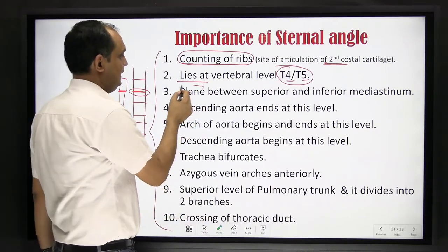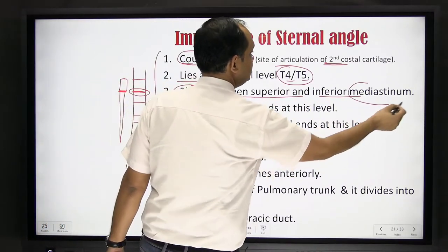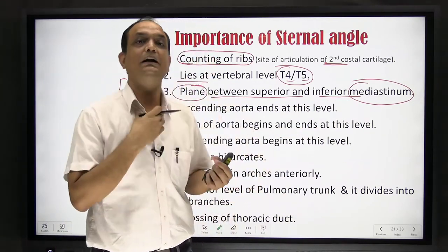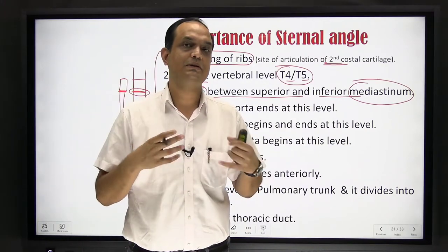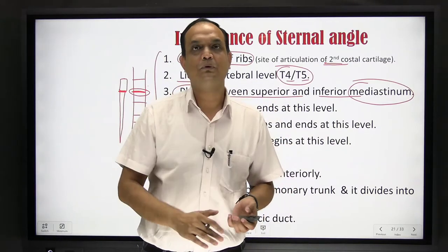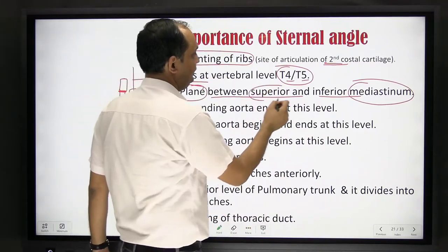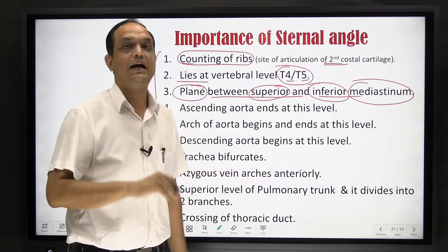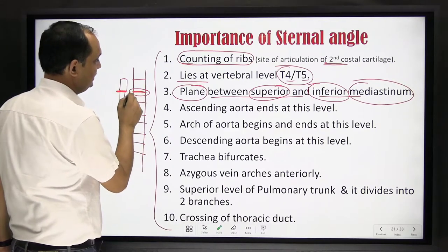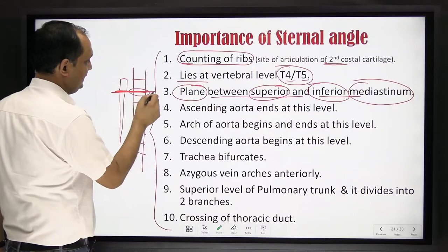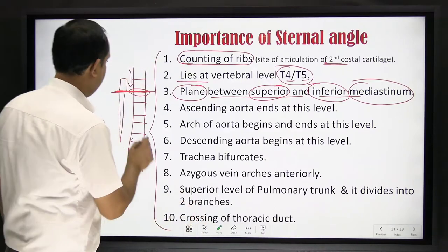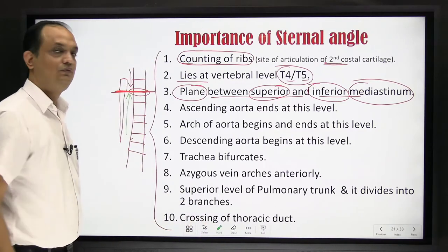This plane decides where we separate the superior and inferior mediastinum. The mediastinum is a soft tissue space in the midline between both lungs in the chest cavity. We divide this gap into the superior and inferior mediastinum by an imaginary plane, and that plane passes anteriorly from the external angle, and posteriorly through the T4-T5 disc. The space created above is called the superior mediastinum, and the space created below is called the inferior mediastinum.